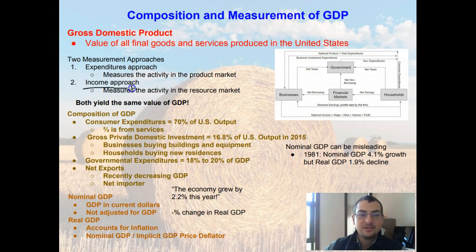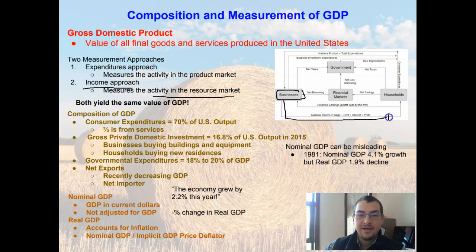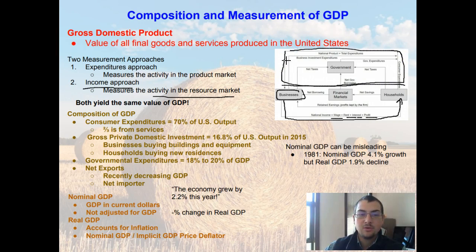The second approach is known as the income approach, which measures the activity in the resource market. The households provide resources to the businesses, and in return the businesses pay out national income in terms of wages, rent, interest, and profits. In an ideal situation, this top half should match the bottom half — theoretically, the income approach and the expenditure approach should equal each other.